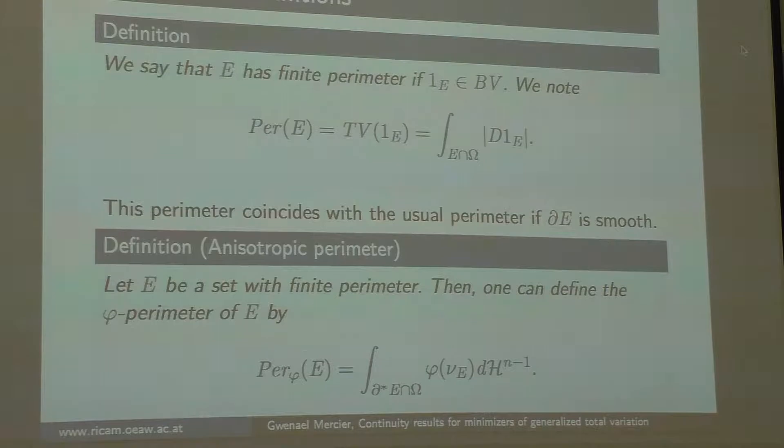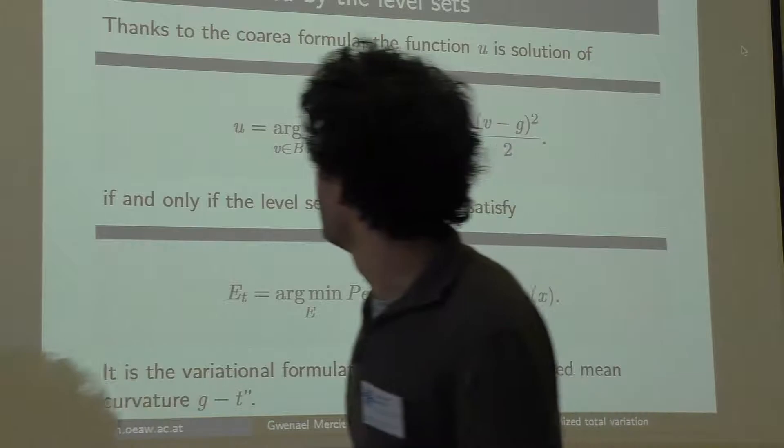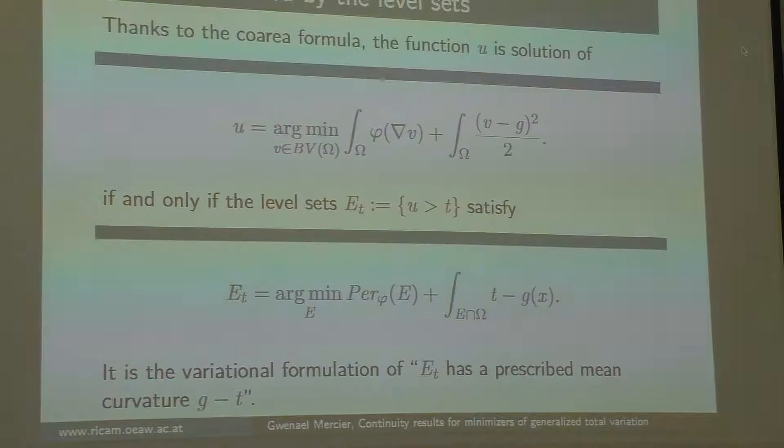Since I use not the Euclidean norm for the total variation, I will need another norm for the perimeter. So I introduce an anisotropic perimeter. What is this quantity? It's the classical perimeter, but I weight the perimeter depending on the orientation of the normal vector. Maybe if you are oriented like this, then it will count a lot. If you are oriented like this, you don't count a lot.